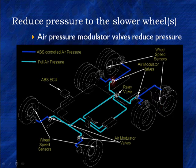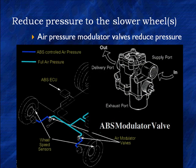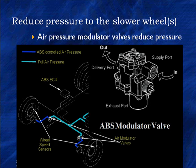We're going to use a modulator valve. You've got an air supply in, valves inside that we can control, an exhaust port for relieving pressure if we need to vent, and an output delivery port to the pair of wheels in the back. This is the typical modulator — it happens to be a Bendix because we had it available.